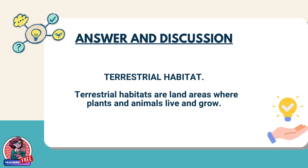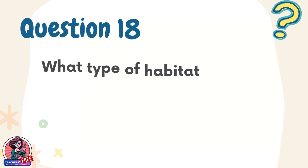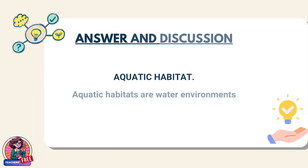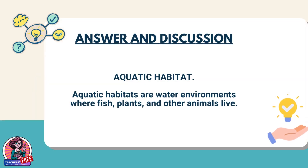Question 18. What type of habitat includes lakes, rivers, and oceans where aquatic organisms thrive? Answer: Aquatic habitat. Aquatic habitats are water environments where fish, plants, and other animals live.